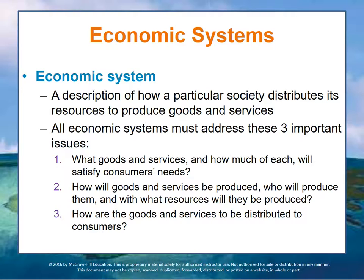Number one: what goods and services, and how much of each, will satisfy customer needs. Number two: how will goods and services be produced, who will produce them, and with what resources will they be produced. And number three: how are the goods and services going to be distributed among the various consumers or organizations that purchase goods and services in the economy.